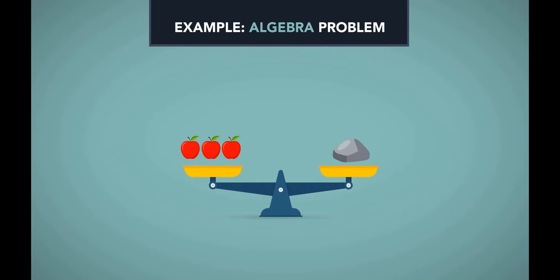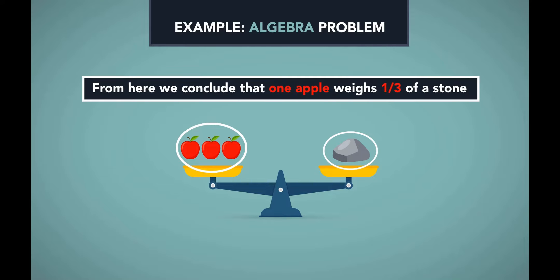But, when we remove four apples and two pears from seven apples and two pears, we are left with three apples on the left side of the scale. On the right side, we had three stones and are now left with one stone after removing two stones. Therefore, we are left with three apples on the left side of the scale and one stone on the right side of the scale. From here, we can conclude that the apple weighs one third of a stone.